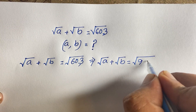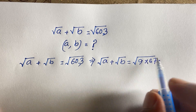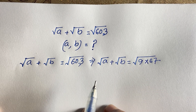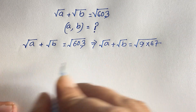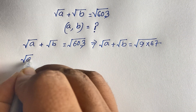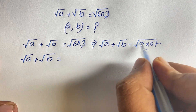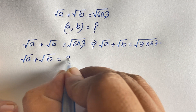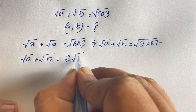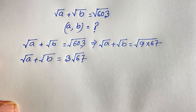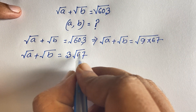Now, I can say that 603 equals 9 times 67, so √603 = √9 × √67 = 3√67. So we have √a + √b = 3√67.